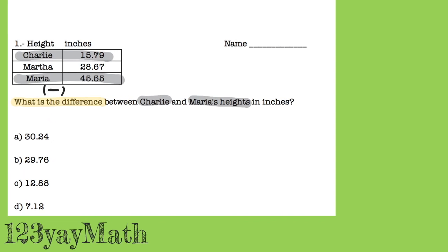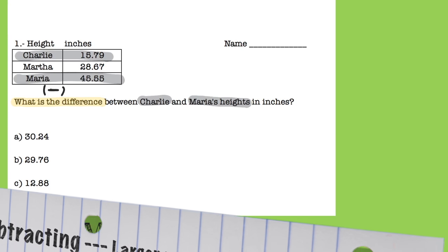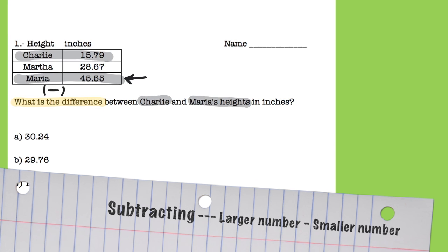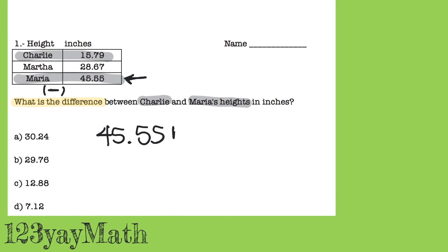Charlie and Maria. When you are subtracting, the larger number goes on top. In this case it's 45.55, and this is Maria, minus 15.79, and this is Charlie. Remember to label.